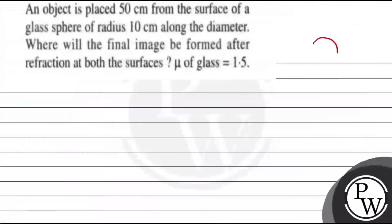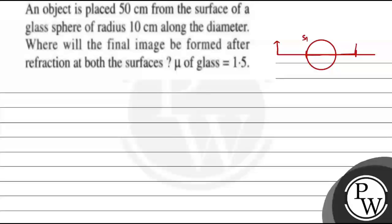The image formed by refraction at the first surface S1 — we had our sphere, diameter, object, and surface S1 at 50 cm. This image will act as a virtual object for surface S2. So the image from S1 acts as the object for S2, placed 30 cm from S2 on the right side.